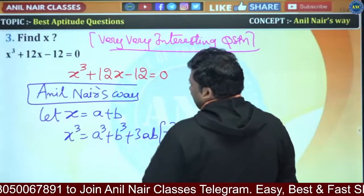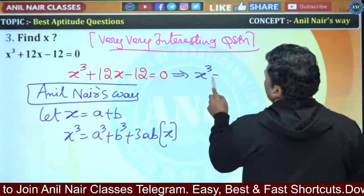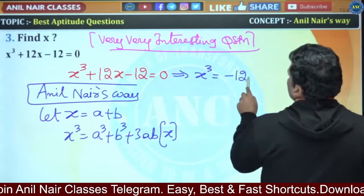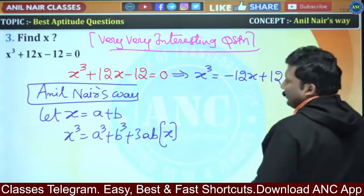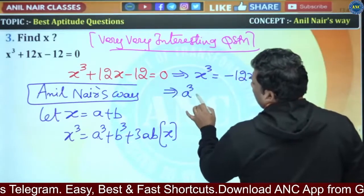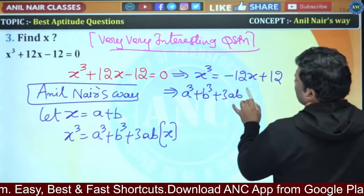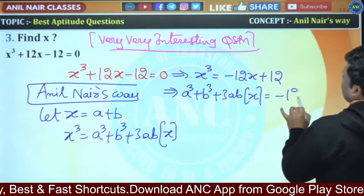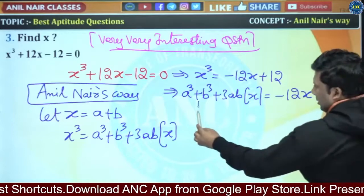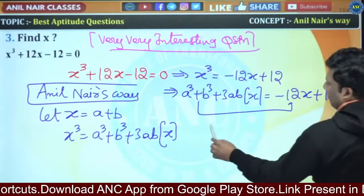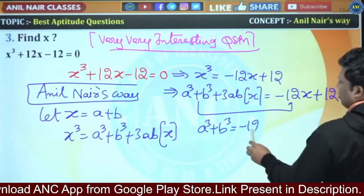So a³ + b³ + 3ab·x = x³. From the original equation, x³ = -12x + 12. Substituting: a³ + b³ + 3ab·x = -12x + 12. So what is a³ + b³? It is 12.